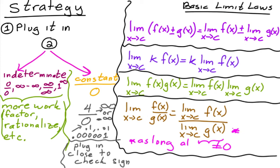So once you get a constant over zero, you already know it's going to either infinity or negative infinity. Then all you need to do is check the sign. Okay.